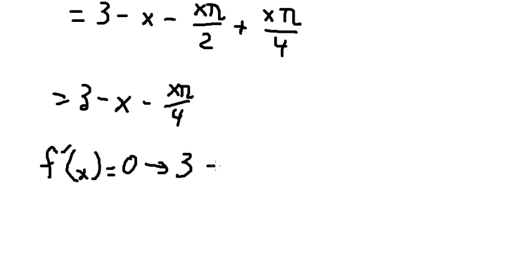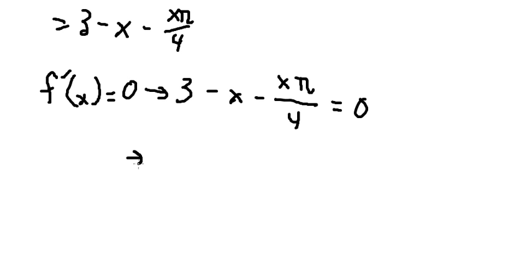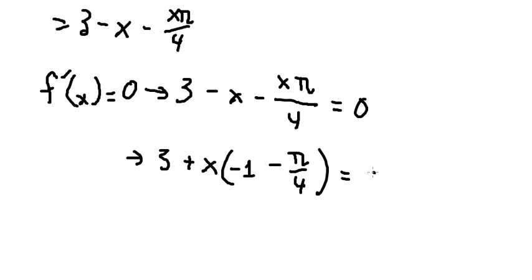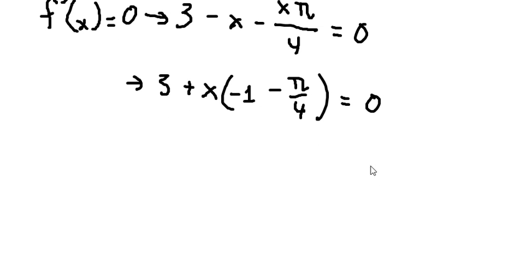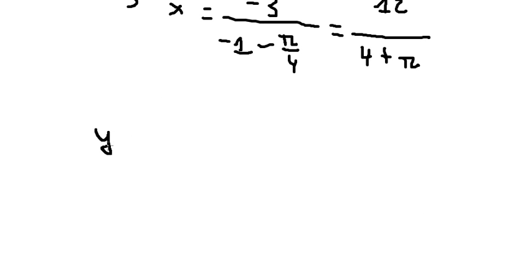That means three minus s minus s pi over four equals zero. Now we have s and s, so we can do factorization. I will put three here and divide both sides, giving us s equals twelve over four plus pi.